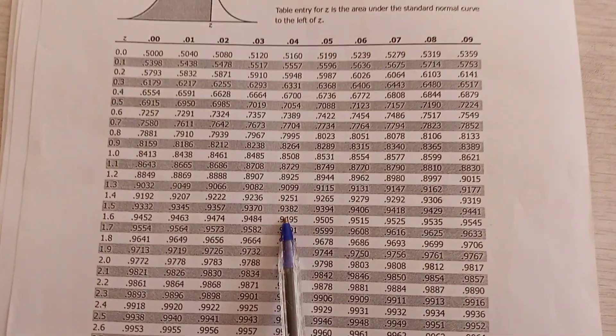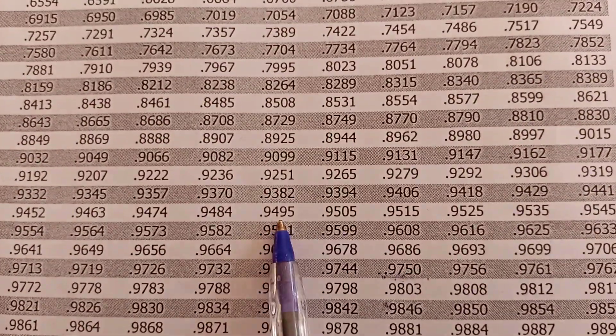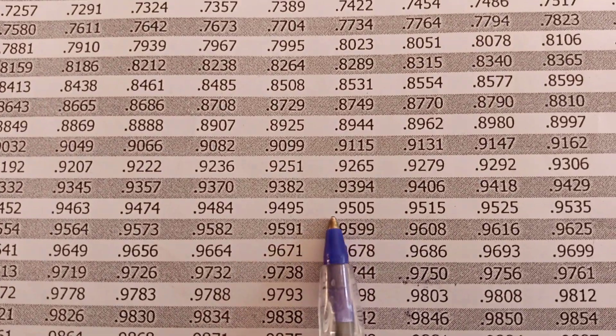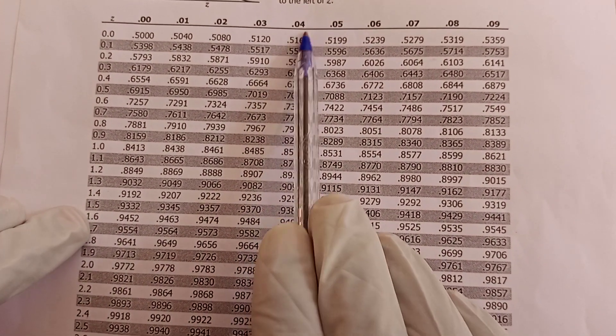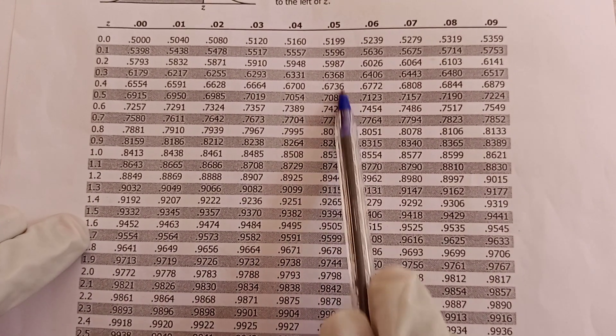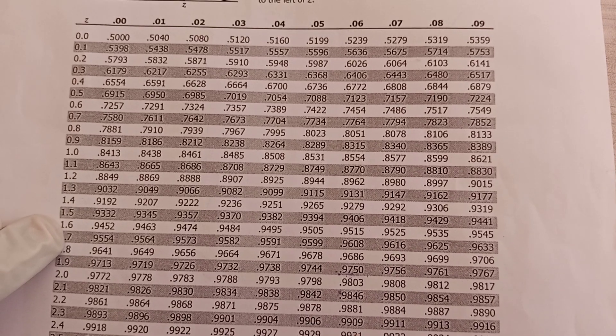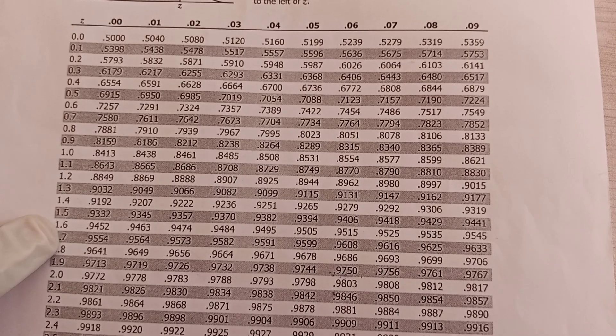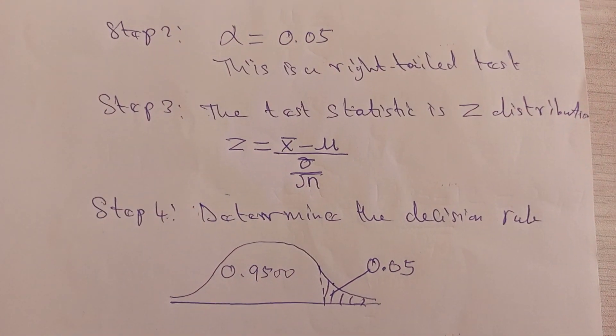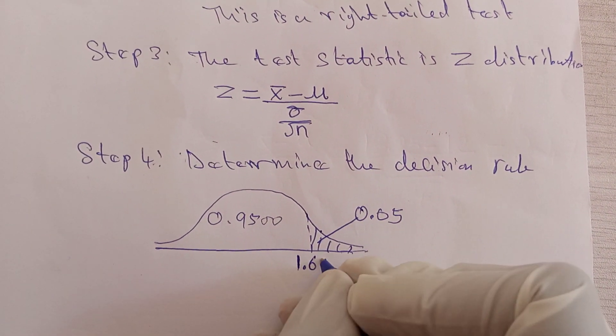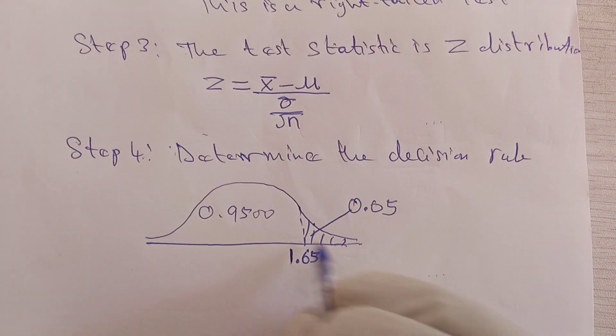We have 0.9495 here and 0.9505 here. 0.9500 is between these two values. The Z score of 0.9495 is 1.64, and the Z score of 0.9505 is 1.65. Add the two Z scores together: 1.64 plus 1.65, all divided by 2, gives you 1.645, which in two decimal places is 1.65. So the critical value of Z is 1.65.